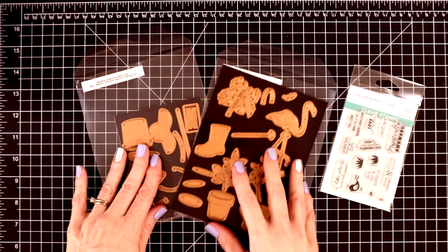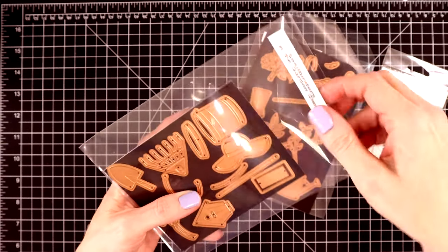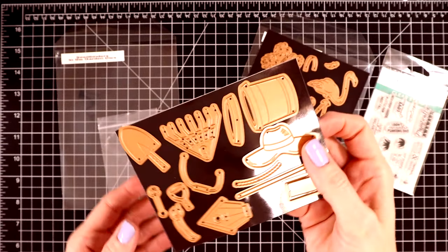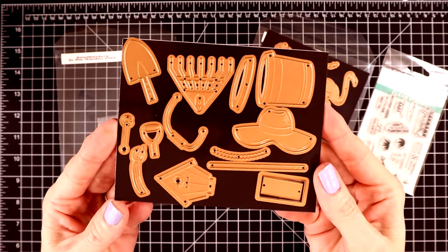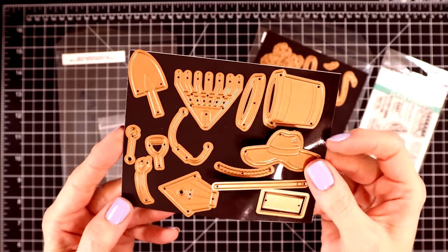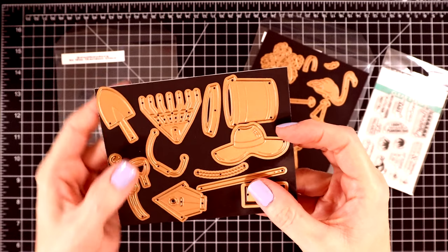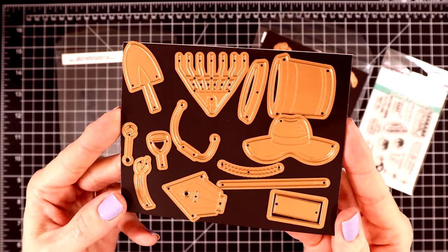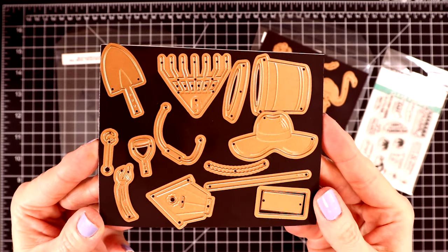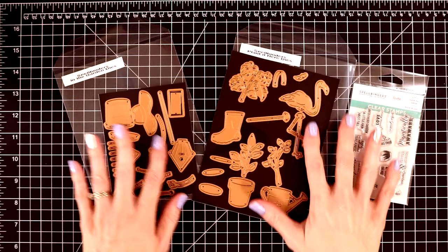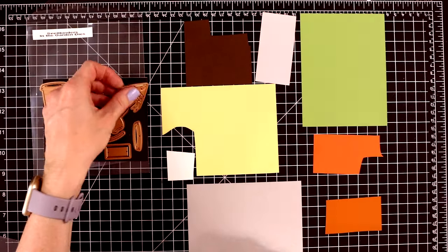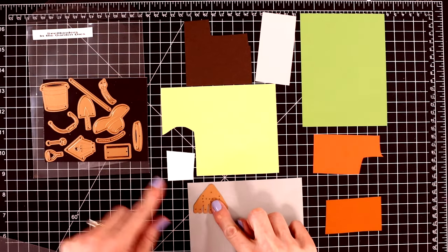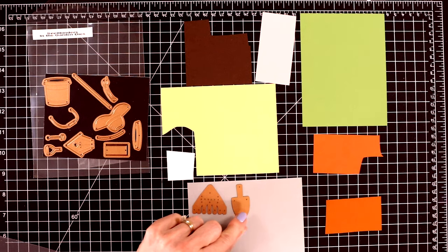This third set is called In the Garden and this one includes the cutest little rake and shovel and garden hat. It even has a birdhouse and lots of fun little elements. I have a lot of gardeners in my family on both sides. My side as well as my husband's side. So this is going to be a really fun set to create some cute cards to send out to them.